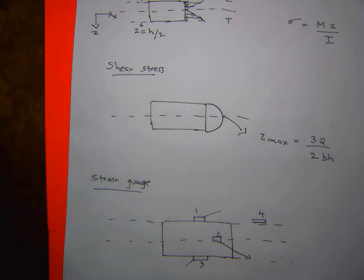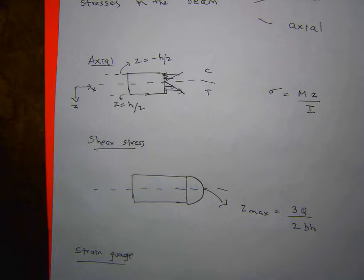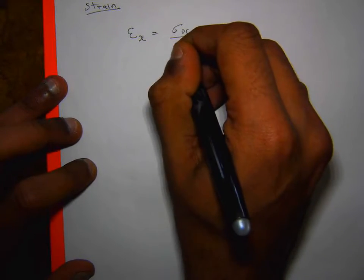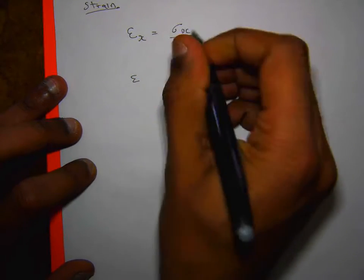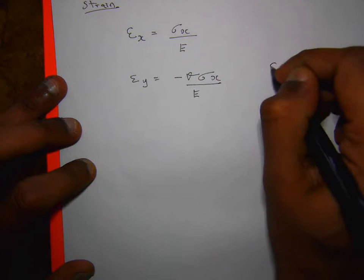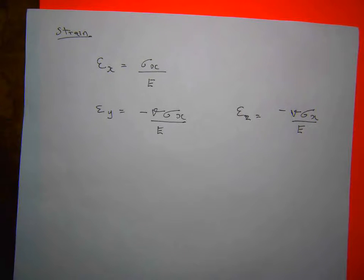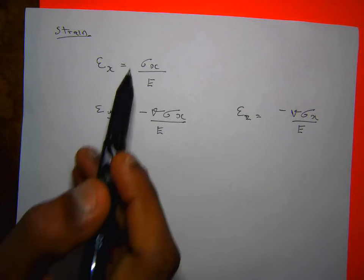Once you know all the stresses that are acting at each gauge position, you just need to convert those stresses to strains. Because it's uniaxial loading, your strain in x is σₓ/E. The strain in y is −ν·σₓ/E, and similarly in z it's −ν·σₓ/E. So the only stress you have is σₓ, the axial stress.